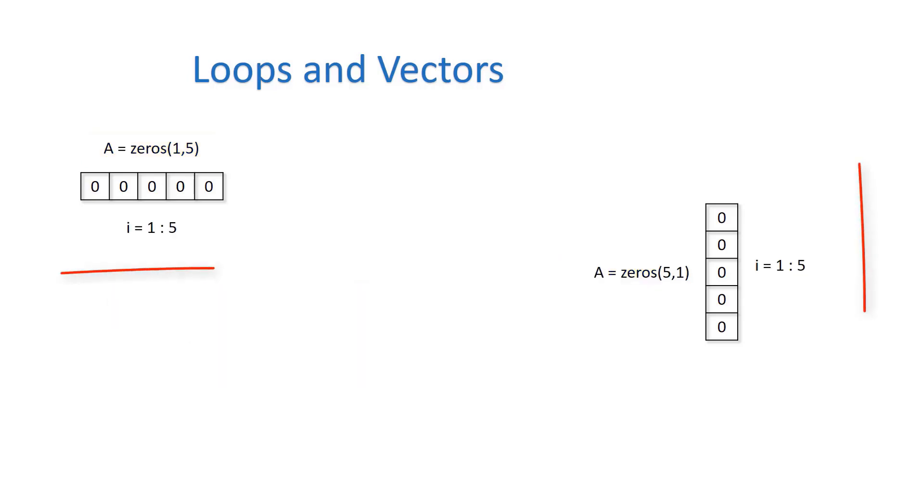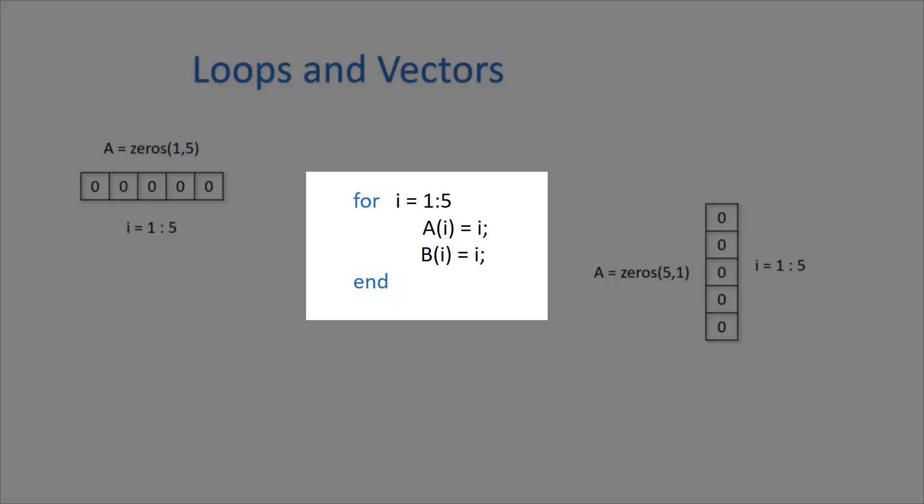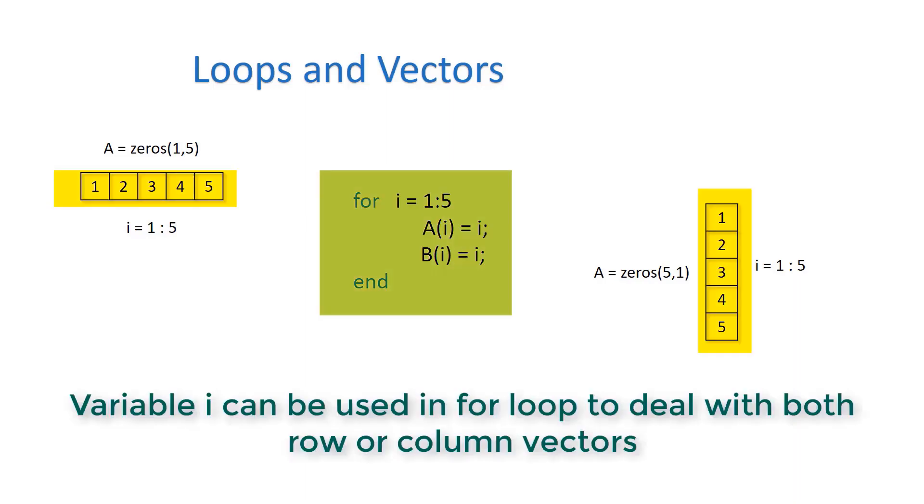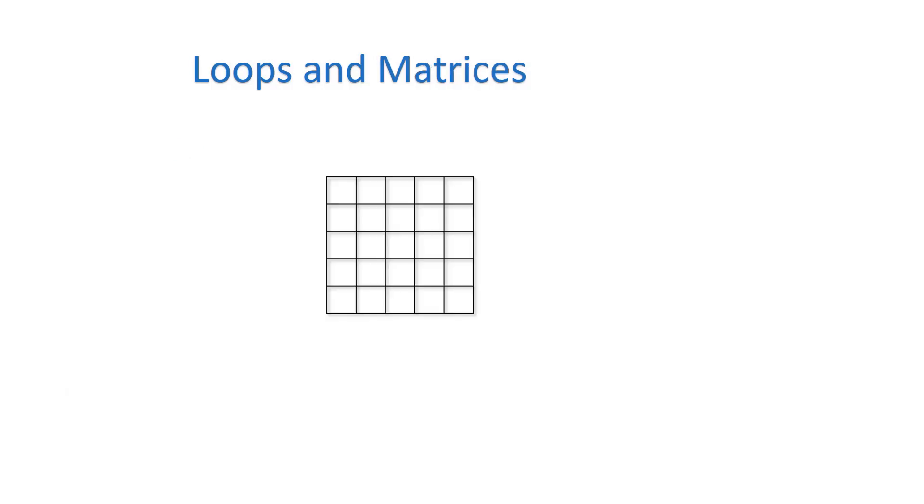The indexing starts with 1 and ends with 5. This is a sample code showing how to access individual elements in these vectors. I'm replacing every element in the vector with its index. A single looping variable is sufficient to deal with row vectors or column vectors.